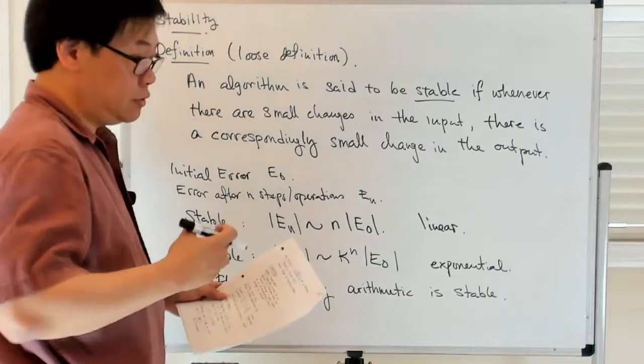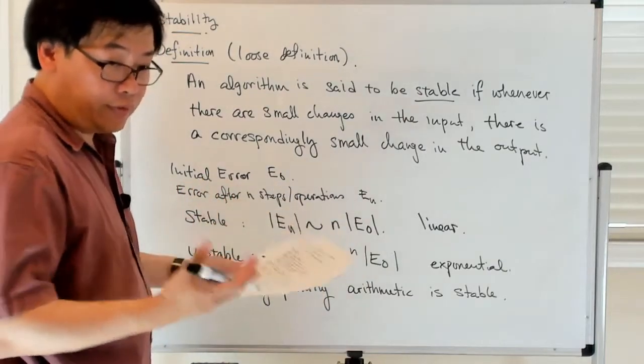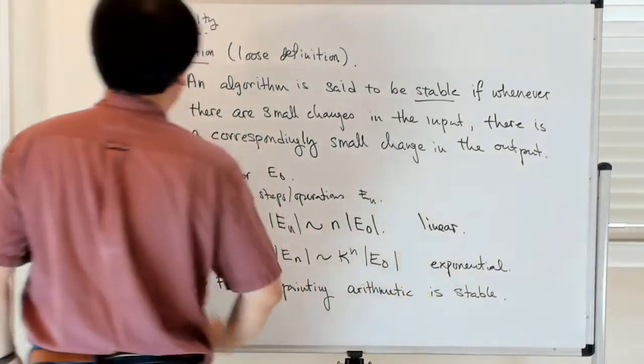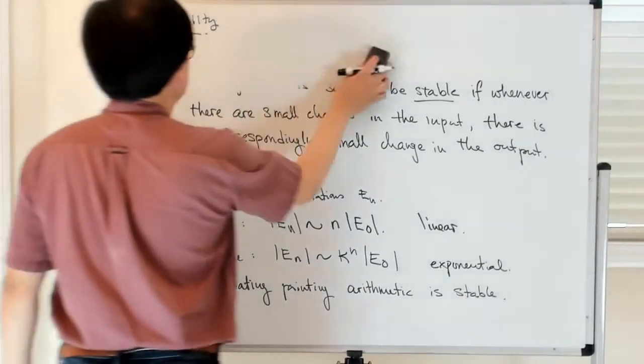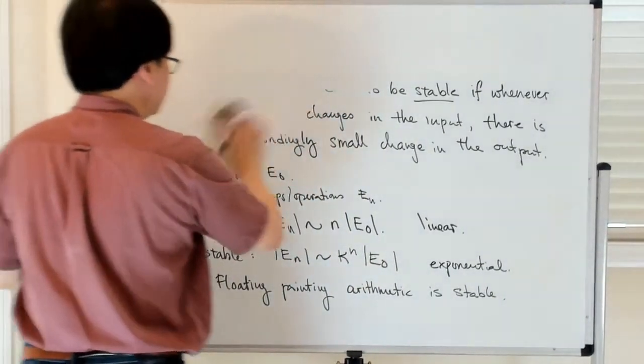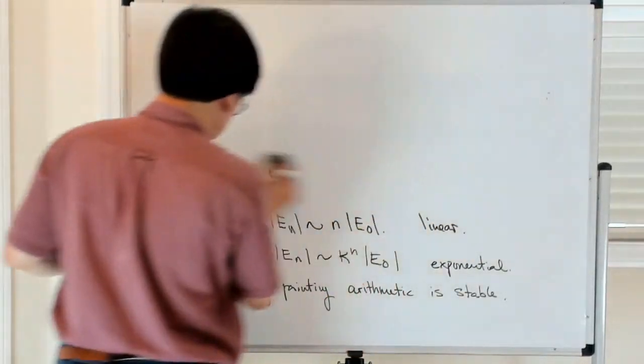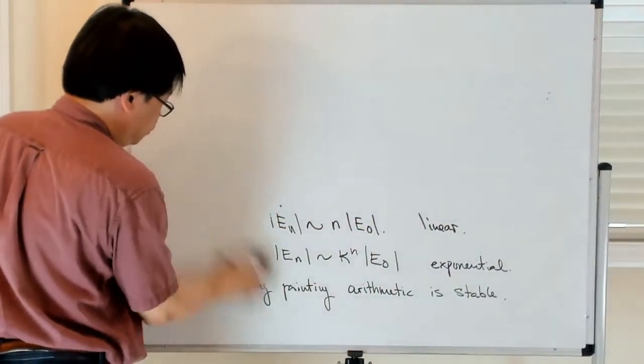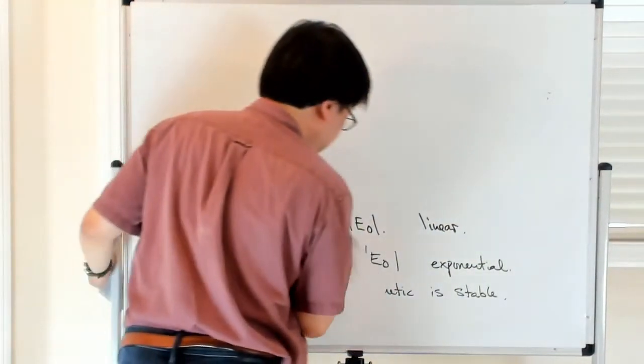So that naturally leads to what is called the big O notation, which is oftentimes used to compare rates of growth of different things. And so let me try to be a bit precise here, and then conclude with an example so that you have a sense as to what is going on.